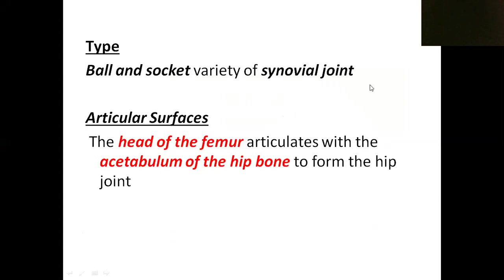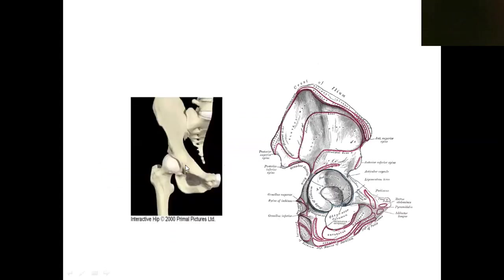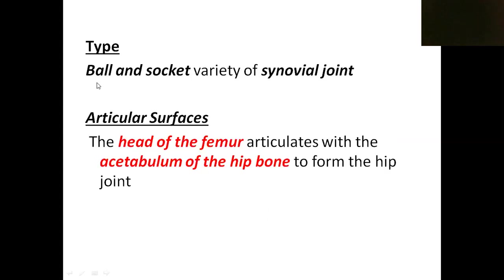The hip joint is a ball and socket variety of synovial joint. In a ball and socket joint, one articular surface is rounded or bowl-like, and the other articular surface is a depression or cup-shaped depression. That is why it is known as a ball and socket joint — it is a movable synovial joint.